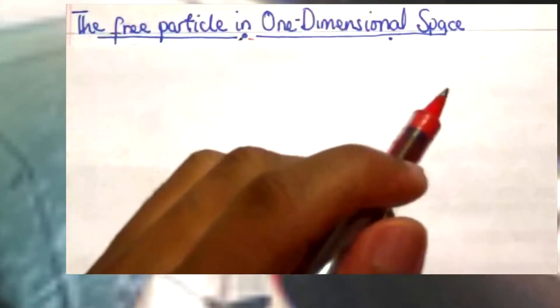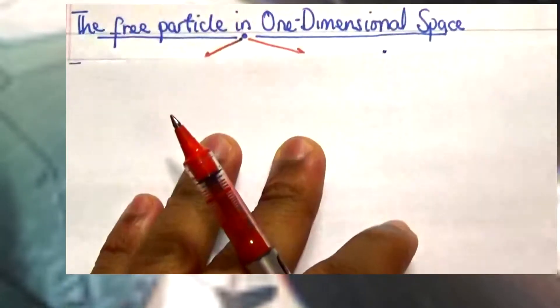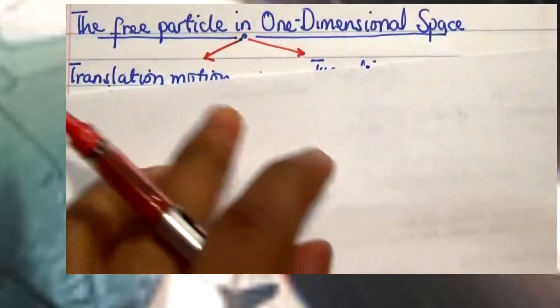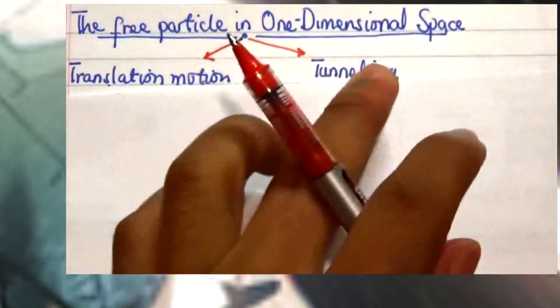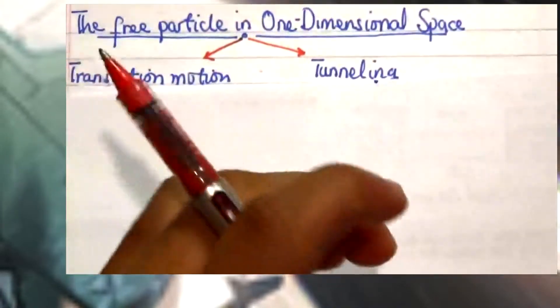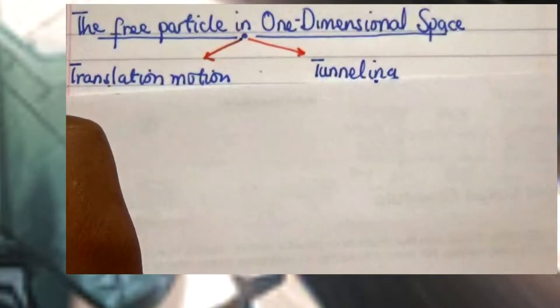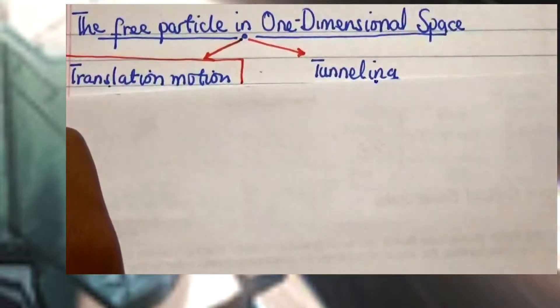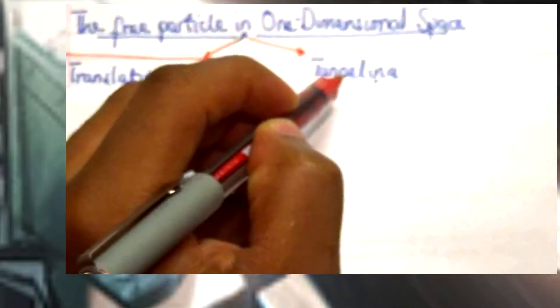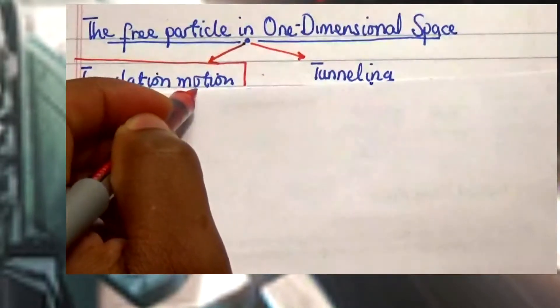That is a particle not in a box. There are two scenarios we need to take note of: the first scenario is translational motion, and the other scenario is tunneling. To keep this video concise, we are going to focus on the first part, which is translational motion of a particle in one-dimensional space. We will focus on tunneling in our next video.